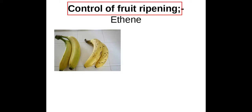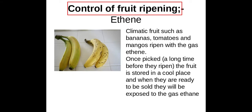First of all, we use ethene to control fruit ripening. This is normally used in fruit that is grown in warmer climates and then transported to cooler ones, such as bananas, tomatoes and mangoes.